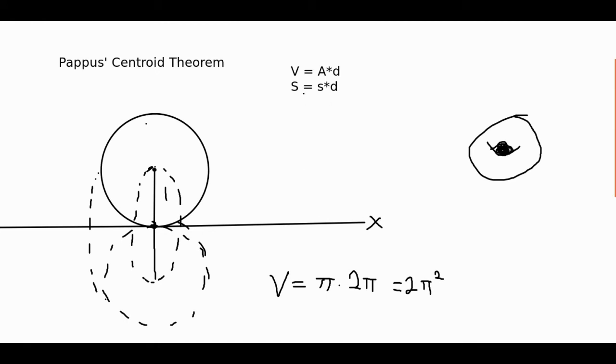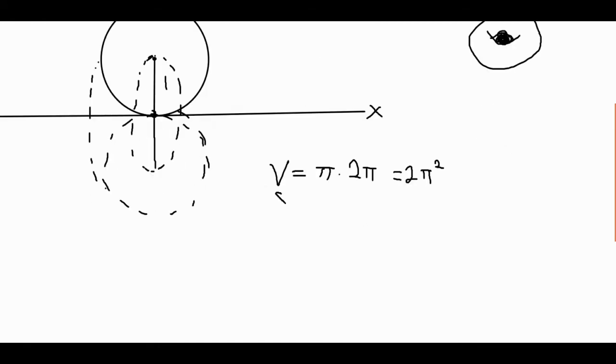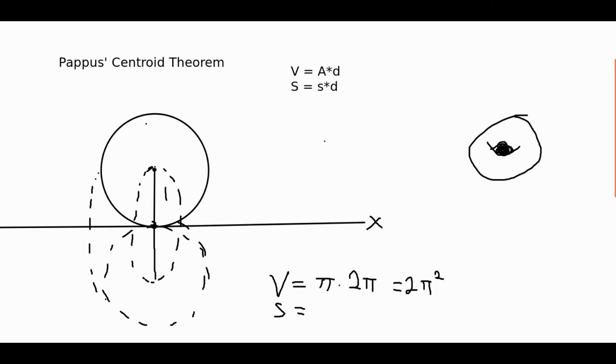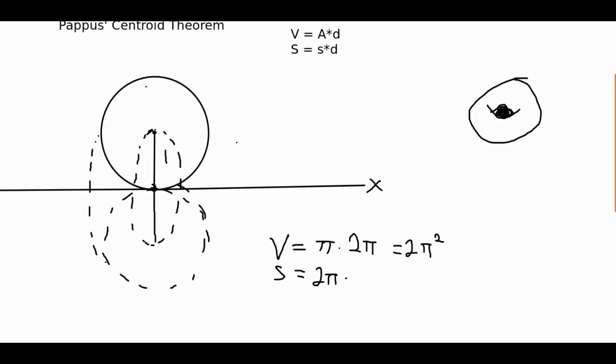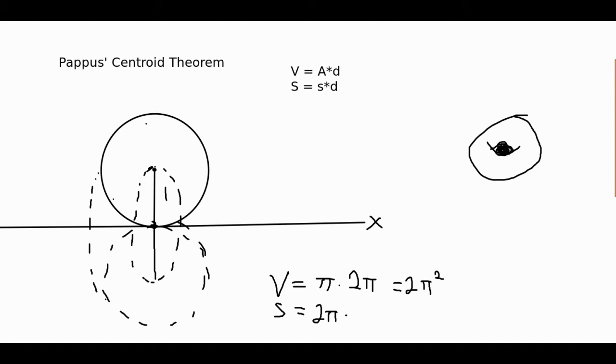And so for the surface area, it's very similar. We take the surface area of our object, which is 2 pi, and multiply by the distance that the centroid of the surface travels. In our case, the centroid of the surface and the centroid of the lamina are the same.